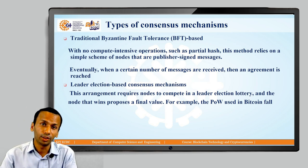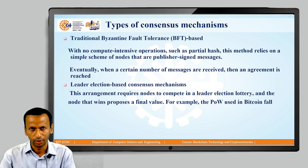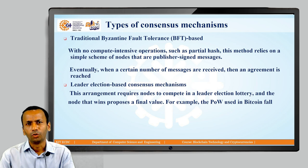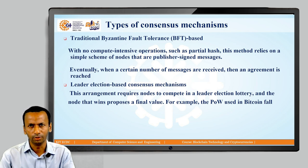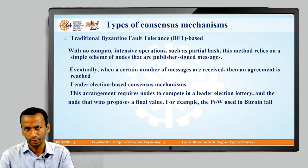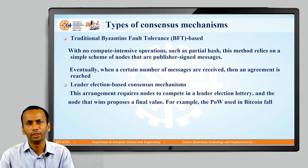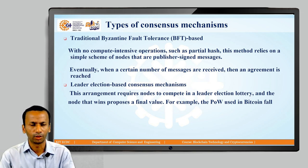The second category is Leader Election based consensus mechanism. This requires nodes to compete in a leader election lottery; the node that wins proposes the final value. A leader is elected through this election process, and that leader proposes the final value. These are the two major categories of consensus algorithms.